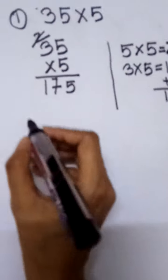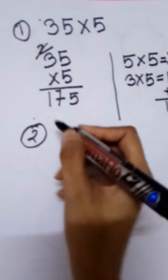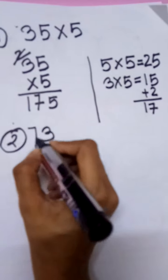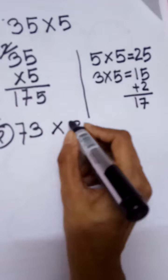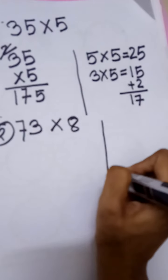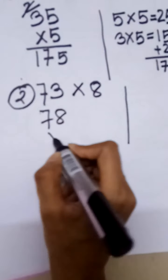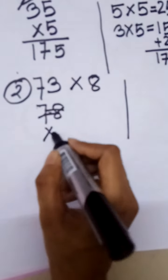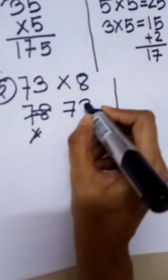Let's solve another one. Number two: 73 multiplied by 8. First, we have to write it vertically. 73 multiply by 8.